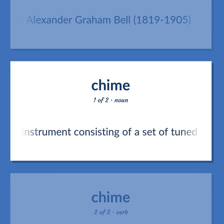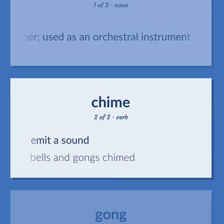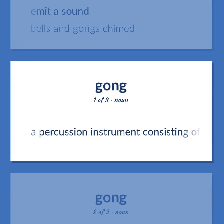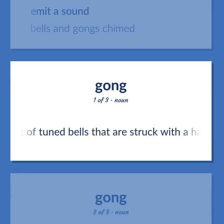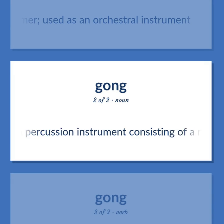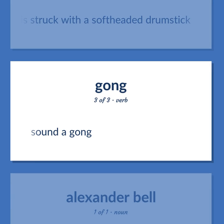A percussion instrument consisting of a set of tuned bells that are struck with a hammer, used as an orchestral instrument. Emit a sound — bells and gongs chimed. A percussion instrument consisting of a metal plate that is struck with a soft-headed drumstick. Sound a gong.